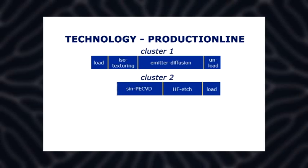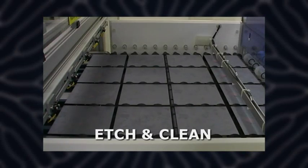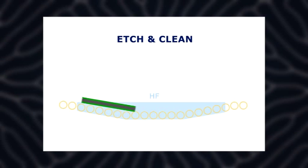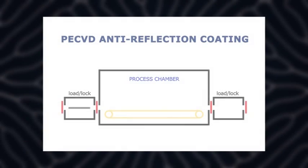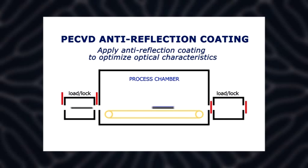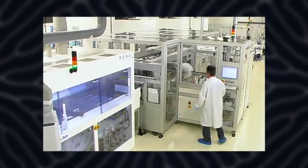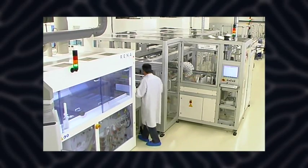Cluster 2 contains the second wet chemical etching step where the phosphorous glass is removed to prepare the wafer for the next step. The PECVD process that applies the anti-reflection coating to the wafer. This PECVD process takes place under vacuum where a plasma is applied to create a very thin layer of silicon nitrate.